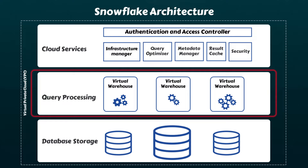Each virtual warehouse operates as an independent compute cluster, so the performance of one virtual warehouse remains unaffected by the activities of others. The cloud services layer acts as the brain of Snowflake — a collection of services that coordinate activities across Snowflake, connecting all components to process user requests from login to query dispatch. Critical services managed within this layer include infrastructure management, query parsing and optimization, metadata management, and authentication and access control.